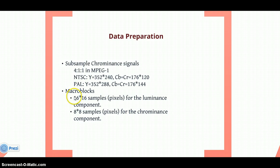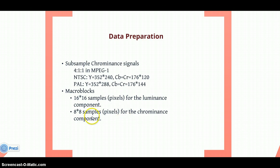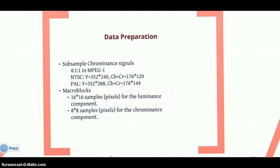Then we divide the frame into macro blocks. For luminance we divide into 16×16 pixel blocks, and for chrominance we divide into 8×8 pixel blocks. So macro blocks are used further in processing.